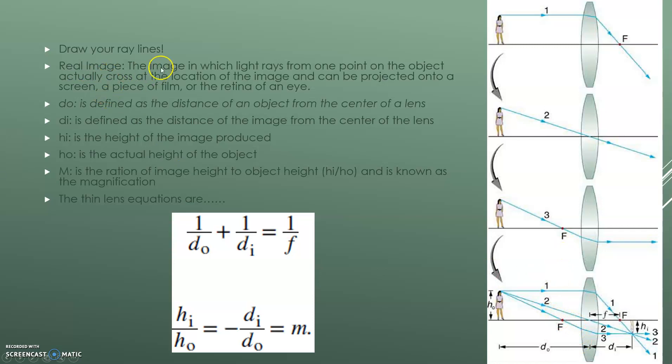So a real image is the image in which light rays from one point on the object actually cross at the location of the image and can be projected onto the screen, a piece of film, or the retina of an eye. So we're going to come back to this in another slide, but just for definition's sake, that's what a real image is.